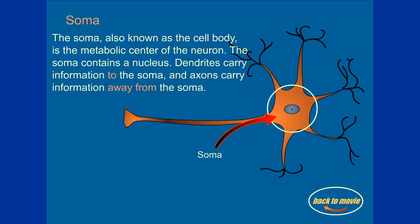Soma. The soma, also known as the cell body, is the metabolic center of the neuron. The soma contains a nucleus. Dendrites carry information to the soma and axons carry information away from the soma.